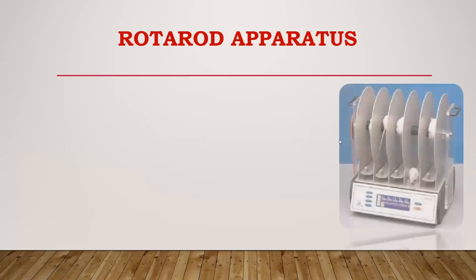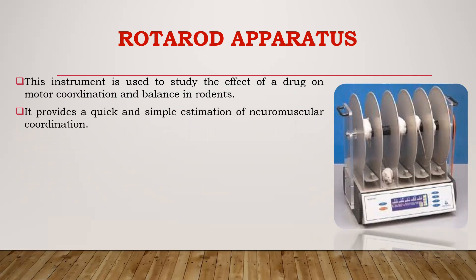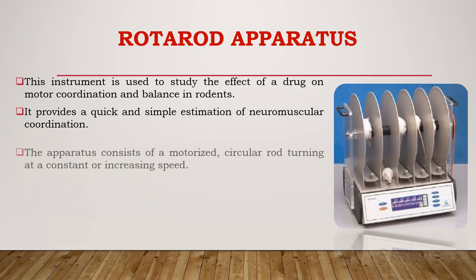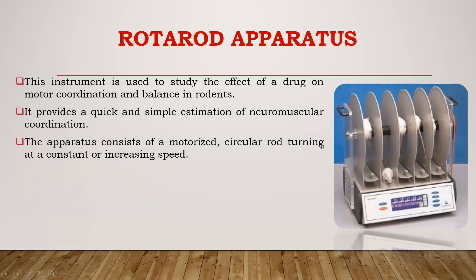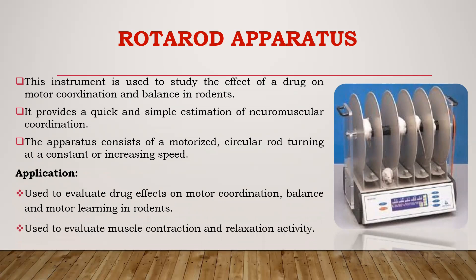Then there is the rota rod apparatus. This is used to study the effect of a drug on motor coordination and balance in rodents. It provides a quick and simple estimation of neuromuscular coordination in animals. The apparatus consists of a motorized circular rod rotating at a constant or increasing speed. The animal is placed on this rod and the fall-off time of the animal is noted, which indicates muscle coordination activity. It is used to evaluate drug effects on motor coordination, balance, motor learning, and muscle contraction and relaxation activity in rodents.